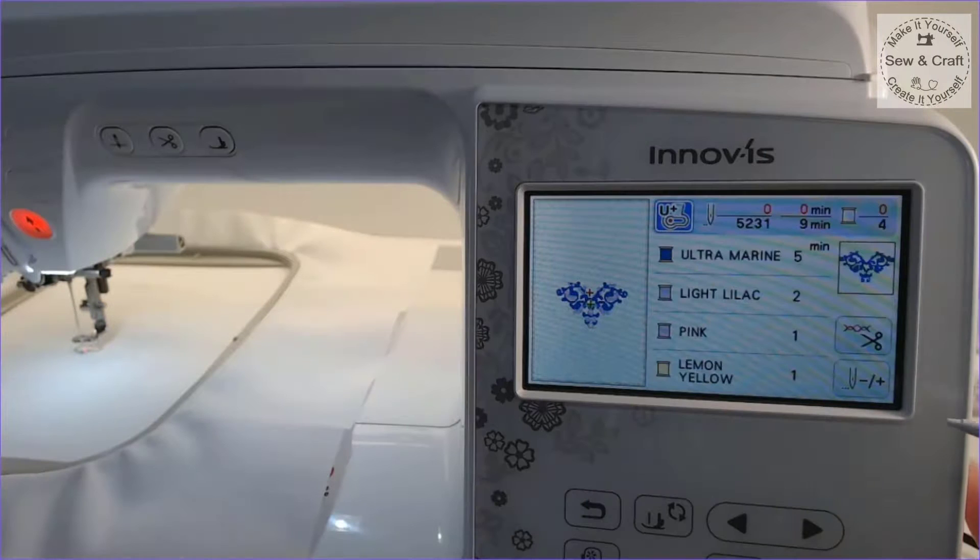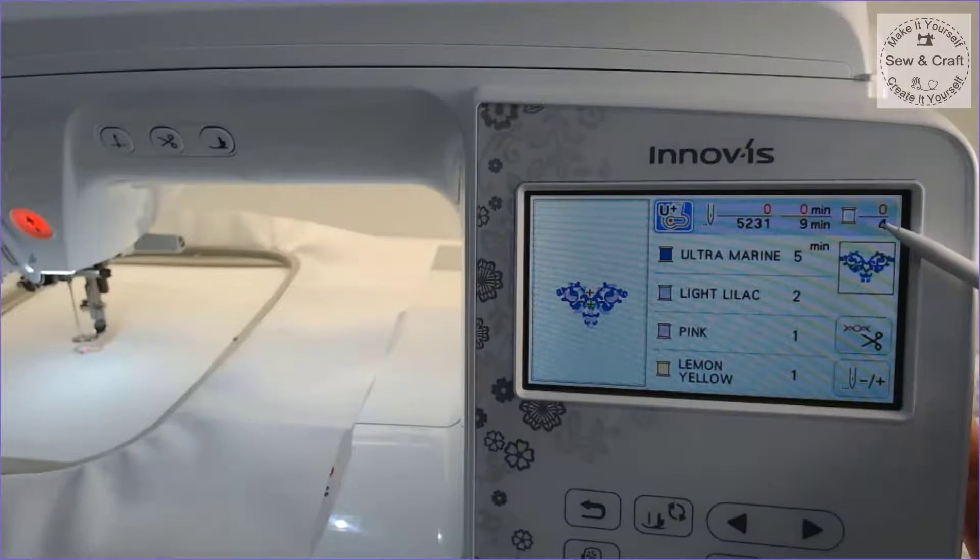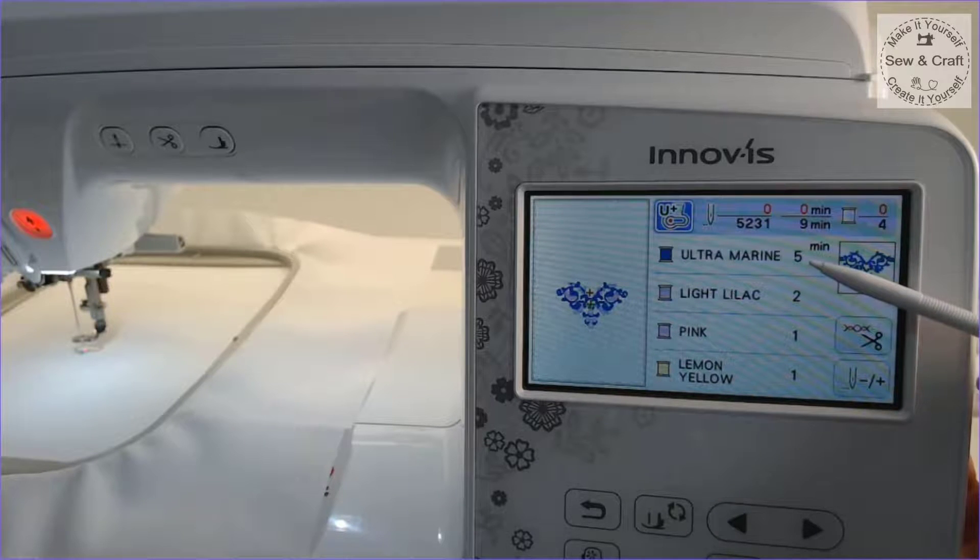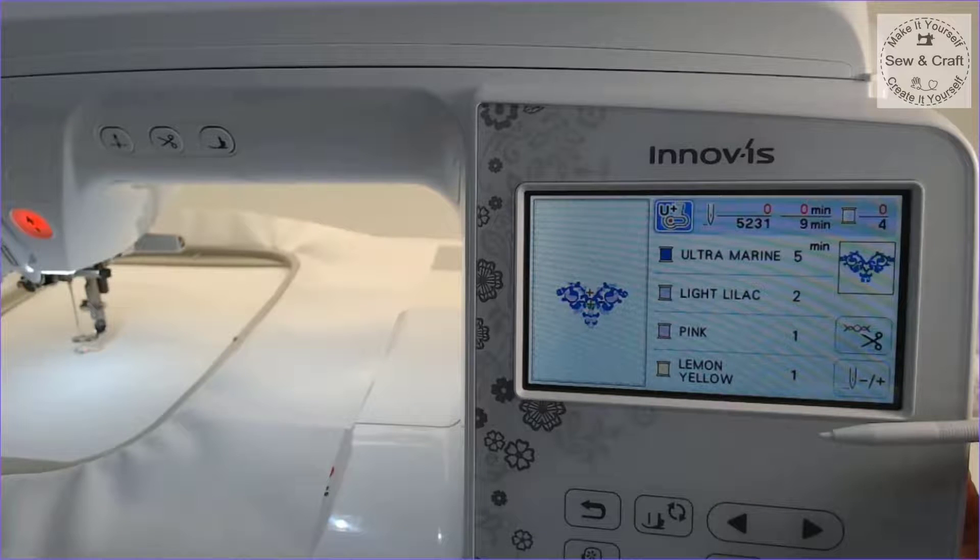Now we're ready to move on to the embroidery screen where we'll see how many stitches there are in the design, how many minutes it's going to take, and how many colors there are. It will line the colors up on your screen. Once the first color has finished embroidering it moves up off the screen and the next color moves up to take its place. You always know exactly what color needs to be threaded next in the sequence.